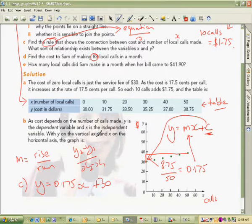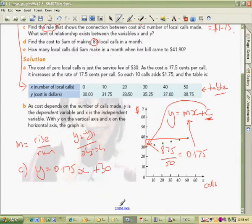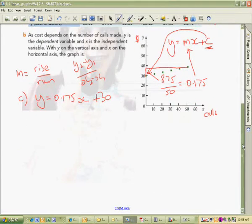Don't forget to write dollars at the end. How many local calls did Sam make when the bill came to $41.90? Still the same problem, it's just that we do this. I might actually do this one though for you. So we're going to use... I'll just put you do that one. It's too easy. And this one here we're going to use the equation.